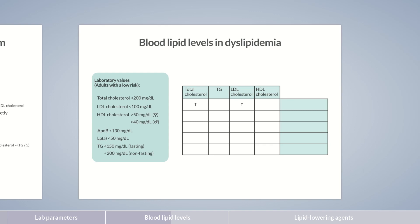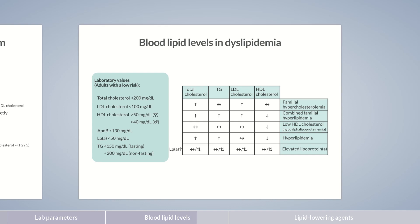If only LDL and total cholesterol levels are elevated and all other laboratory parameters are normal, the dyslipidemia is classified as familial hypercholesterolemia. If triglyceride levels are increased and HDL levels decreased, the condition is termed combined familial hyperlipidemia. If all values are within the normal range and only HDL levels are decreased, the condition is called low HDL cholesterol or hyperalpha lipoproteinemia. In hyperlipidemia, triglycerides and total cholesterol levels are increased whereas HDL levels are decreased, while LDL cholesterol is within the normal range. In the case of elevated lipoprotein(a), lipoprotein(a) levels are increased whereas any combination is possible for all other measured laboratory values.